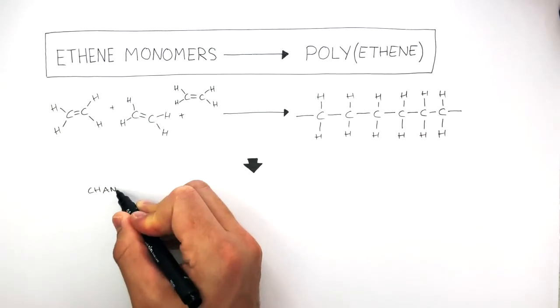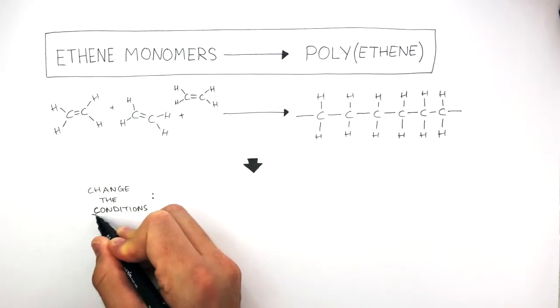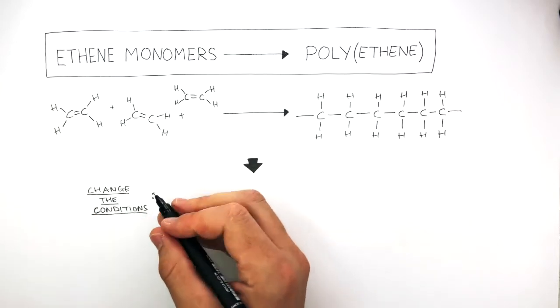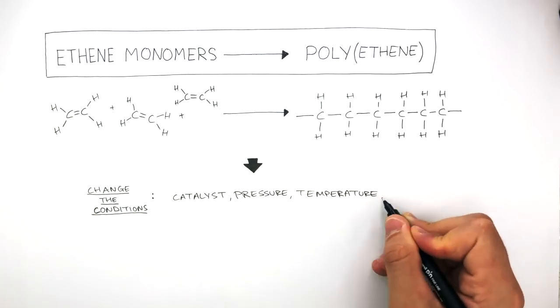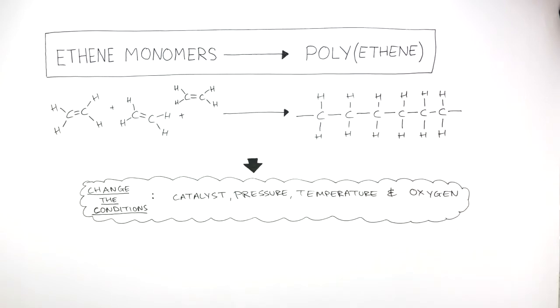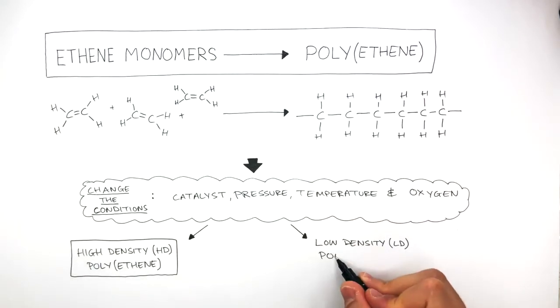If we change the conditions when making the polyethene so that we change the catalyst used, the pressure, the temperature, and how much oxygen there is, this means we can change the type of polyethene formed. So we can form either a high-density polyethene, HD polyethene, or low-density polyethene, LD polyethene.